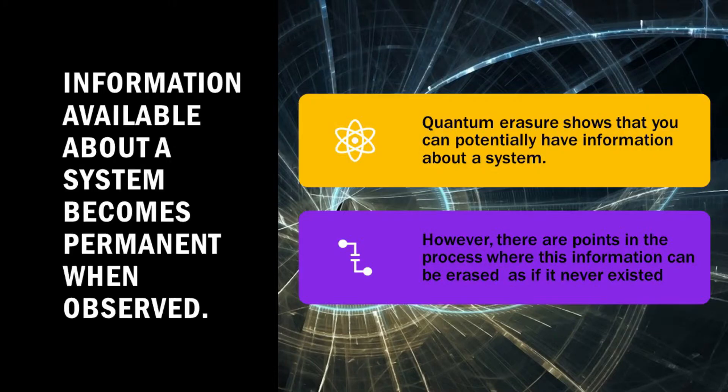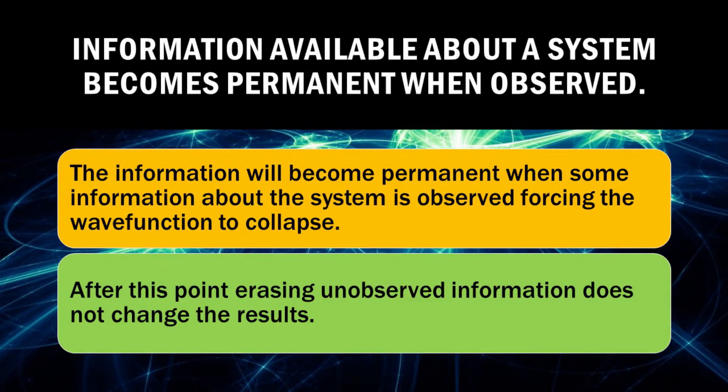Quantum erasure shows that you can potentially have information about a system. However, there are points in the process where this information can be erased as if it never existed. The information will become permanent when some information about the system is observed, forcing the wave function to collapse. After this point, erasing unobserved information does not change the results.